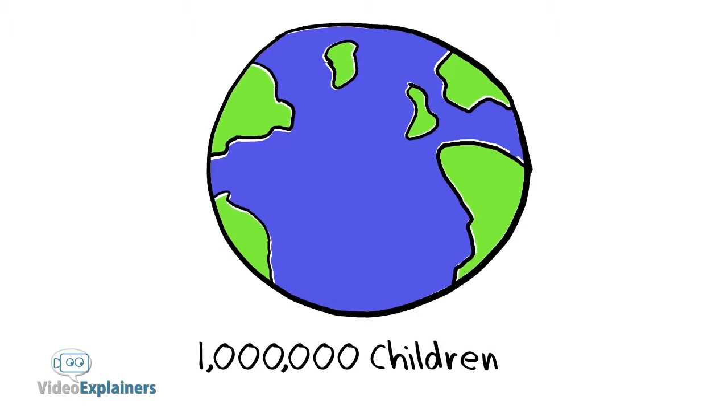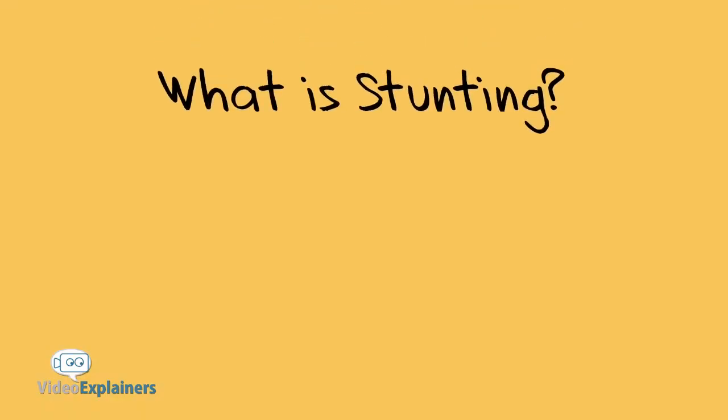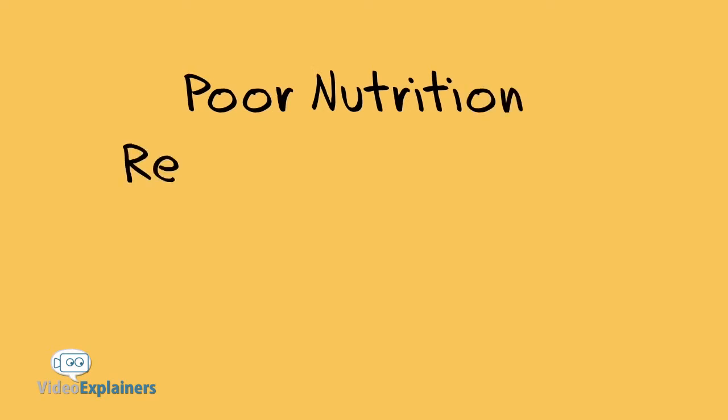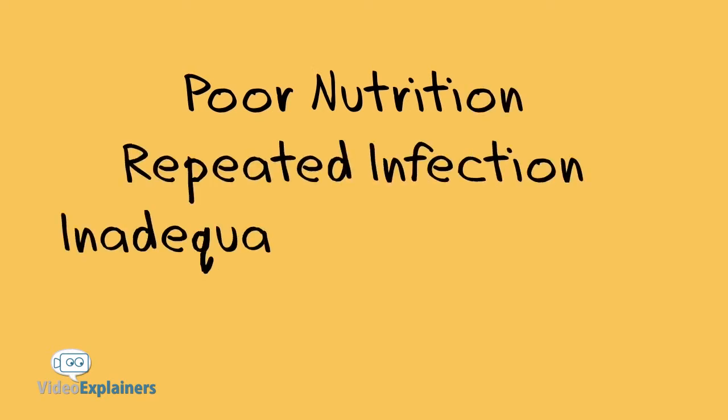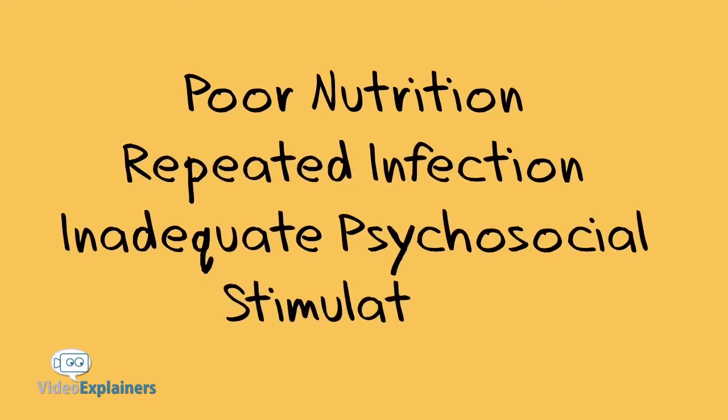The journey to reduce that number begins with education. So, what is stunting? Stunting is the impaired growth and development that children experience from poor nutrition, repeated infection and inadequate psychosocial stimulation.